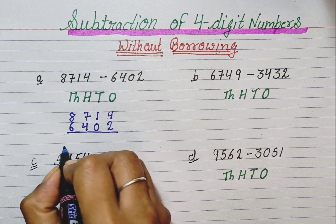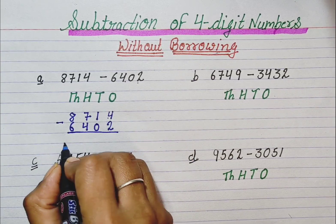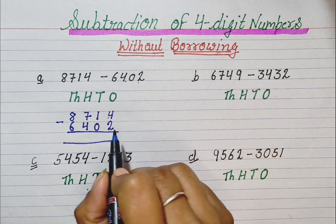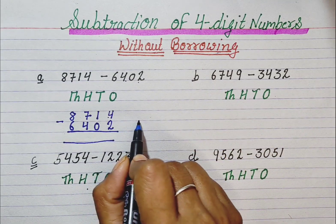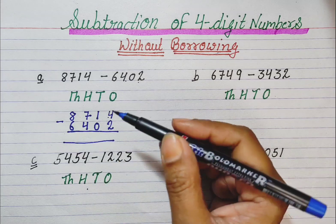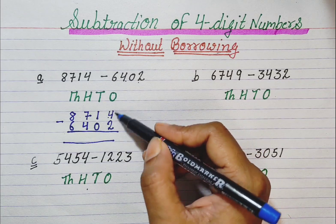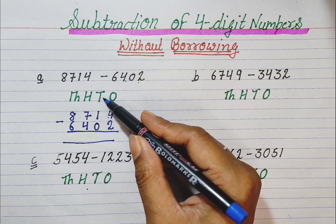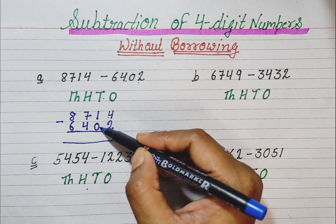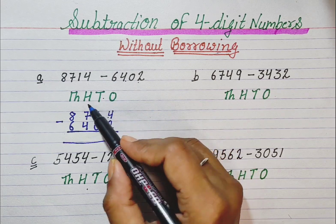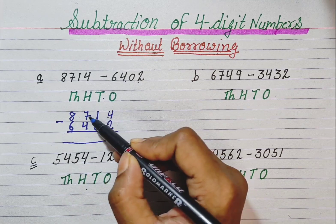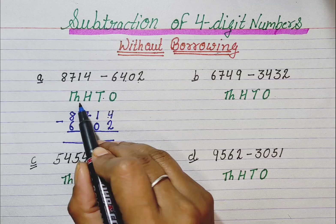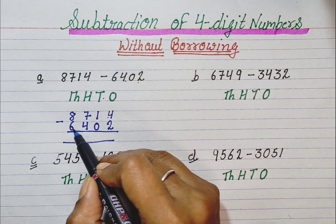Now we subtract them. Students, we start subtraction from the right side. First, we subtract the 1's digits. After that, we subtract the 10's digits. After that, we subtract the 100's digits. And after that, we subtract the 1000's digits.